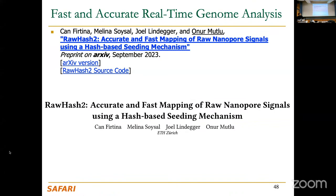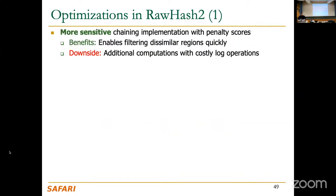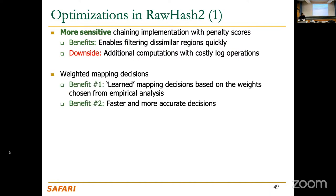Now, very briefly, I'll mention RawHash-2, an improvement on top of RawHash. One optimization is applying a more sensitive chaining algorithm — the dynamic programming-based algorithm is made even more sensitive, which increases accuracy but requires more computation. We also make mapping decisions based on weighted decisions — a kind of learned mapping based on empirically chosen weights — enabling faster and more accurate mapping decisions.